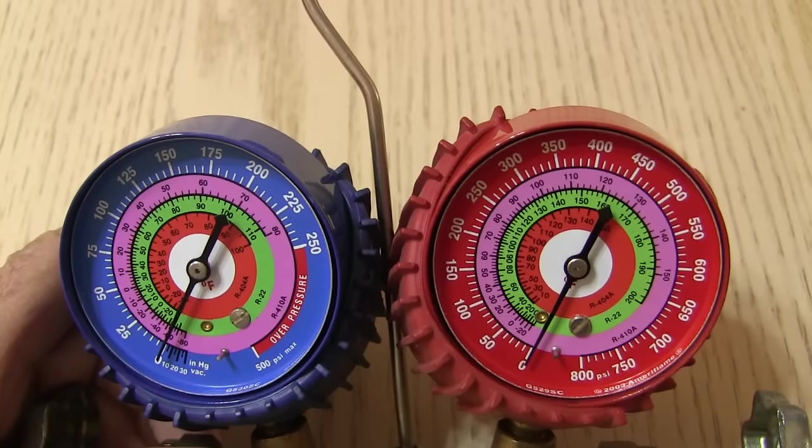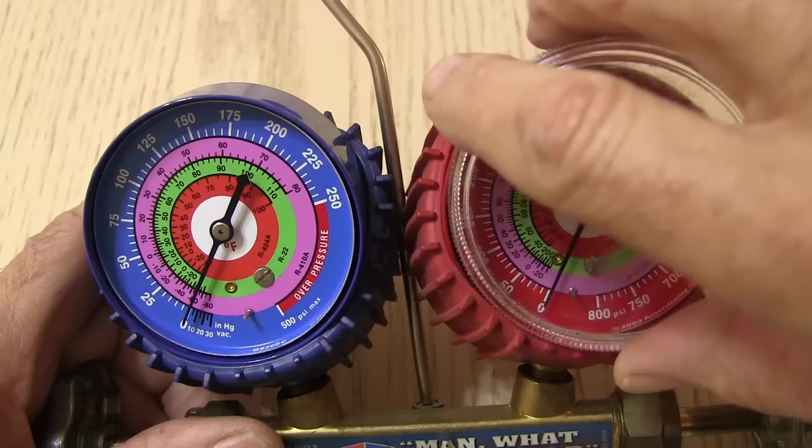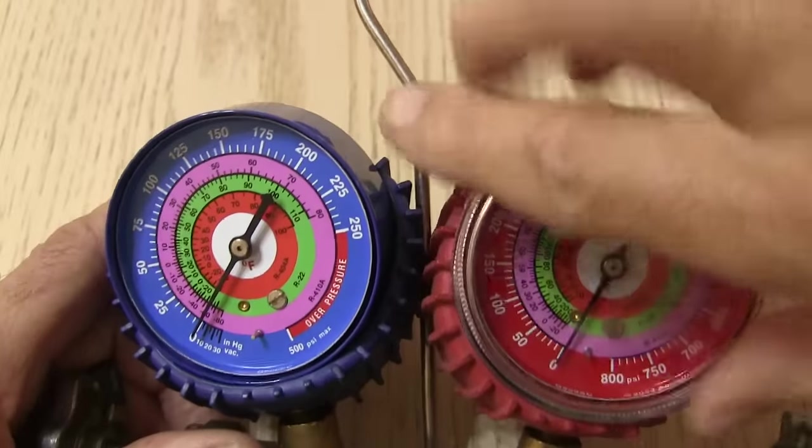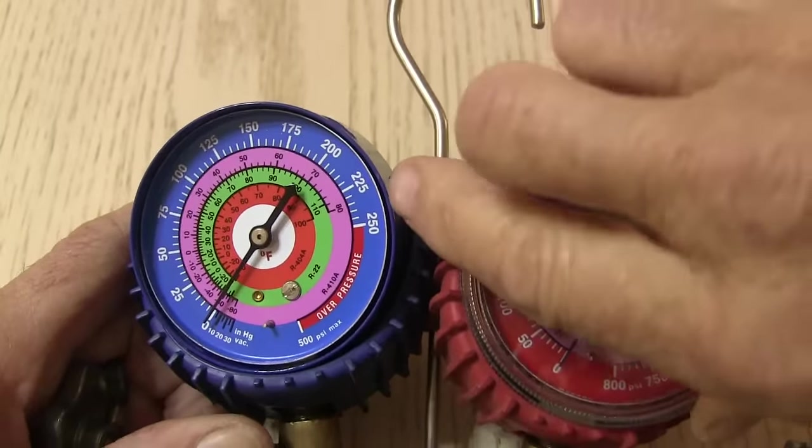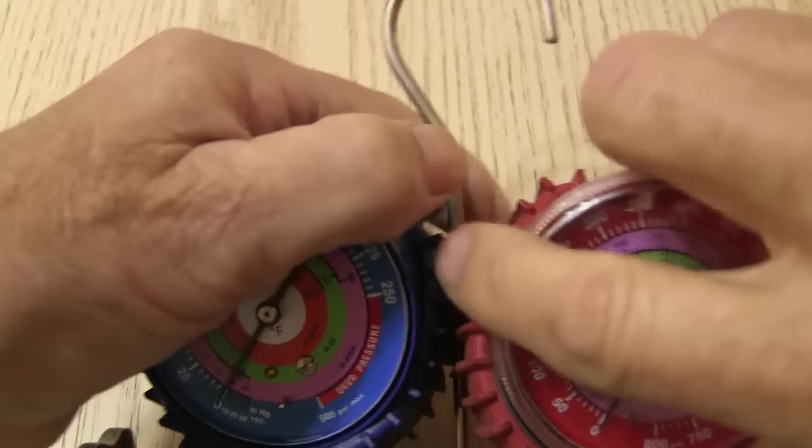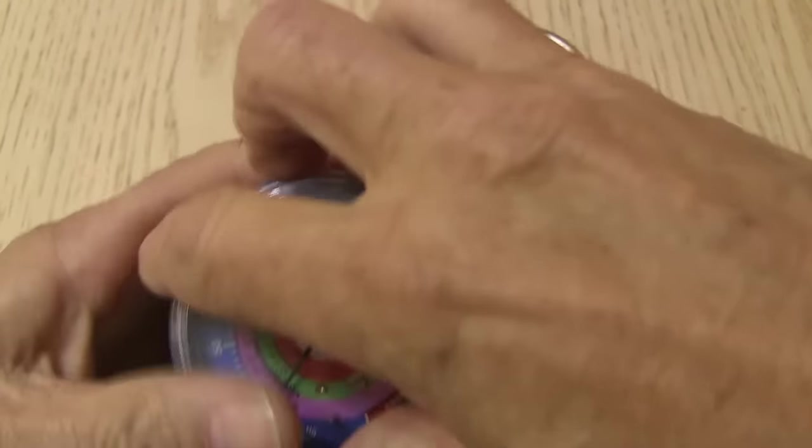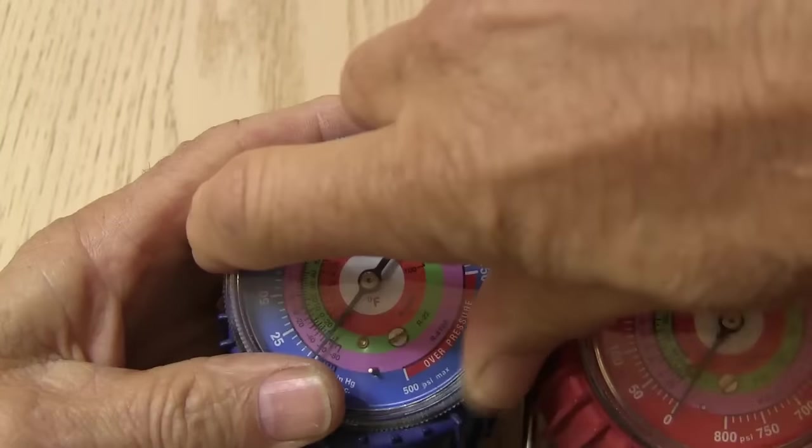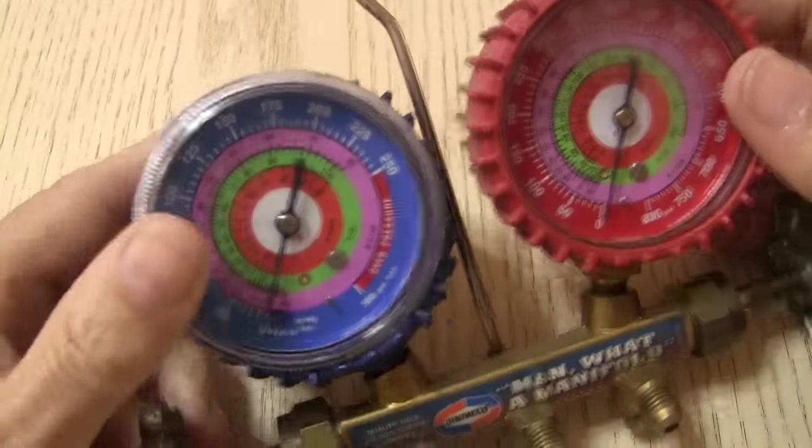Alright. So once you get your gauges zeroed out, you can put the lenses back in place. Just slip them on there and give them a turn.